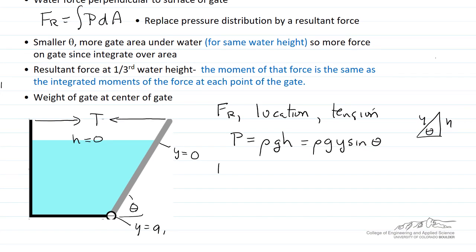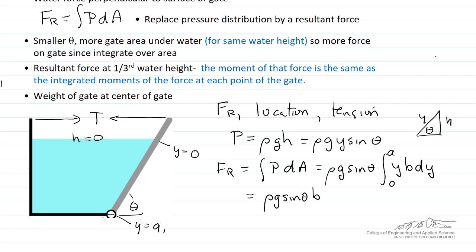To calculate this force, we integrate the pressure over the area of the gate. We're integrating ρg sin(θ), which are all constants, times y. The area of the gate is the depth b times dy, so that's the differential area. Integrating from y equals zero to a1.